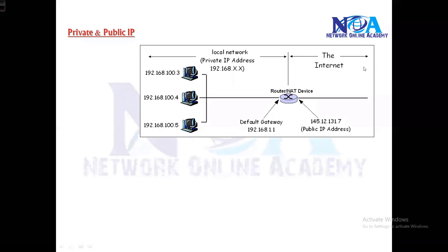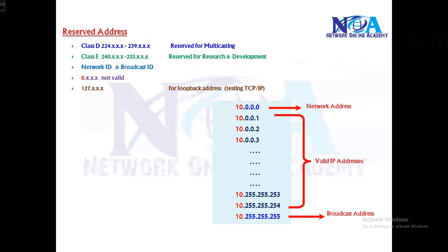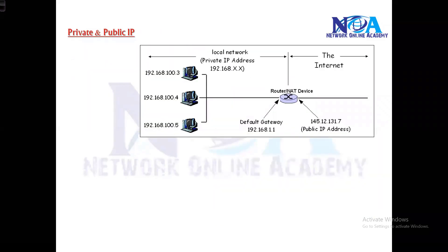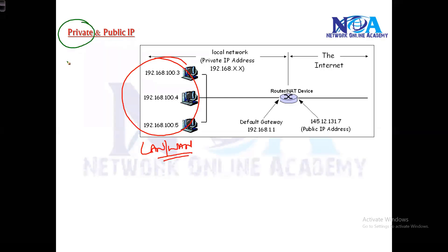The next thing we'll get into is private and public IP addresses. In the previous section we saw reserved addresses — those are addresses which are reserved. All other addresses you can use are further classified into two categories: private IP and public IP. Private IPs are used within your LAN or WAN, within your company network. Public IPs are used on the internet.